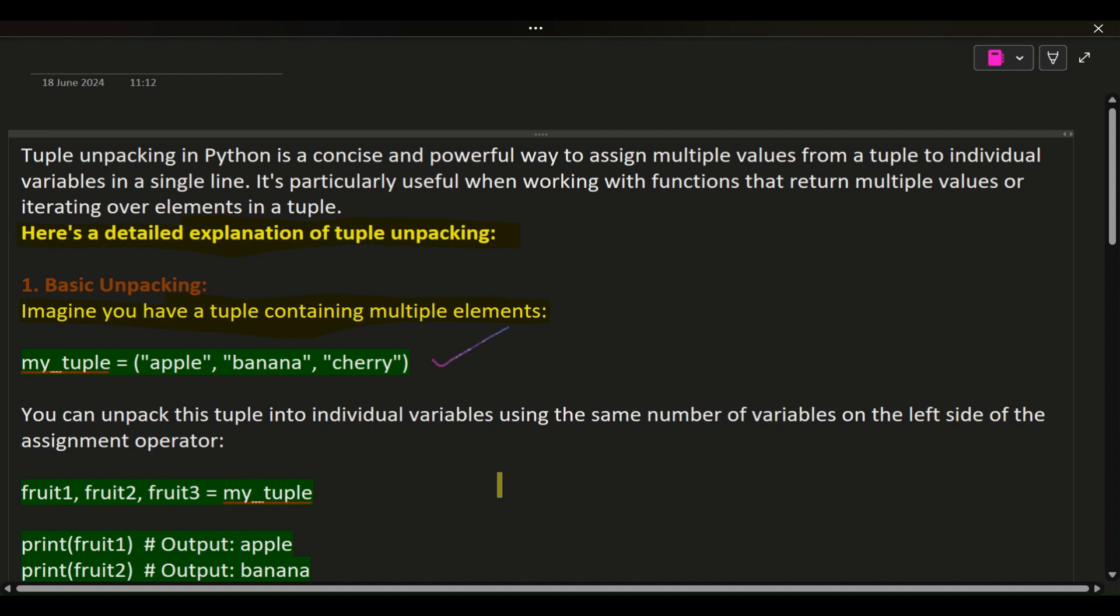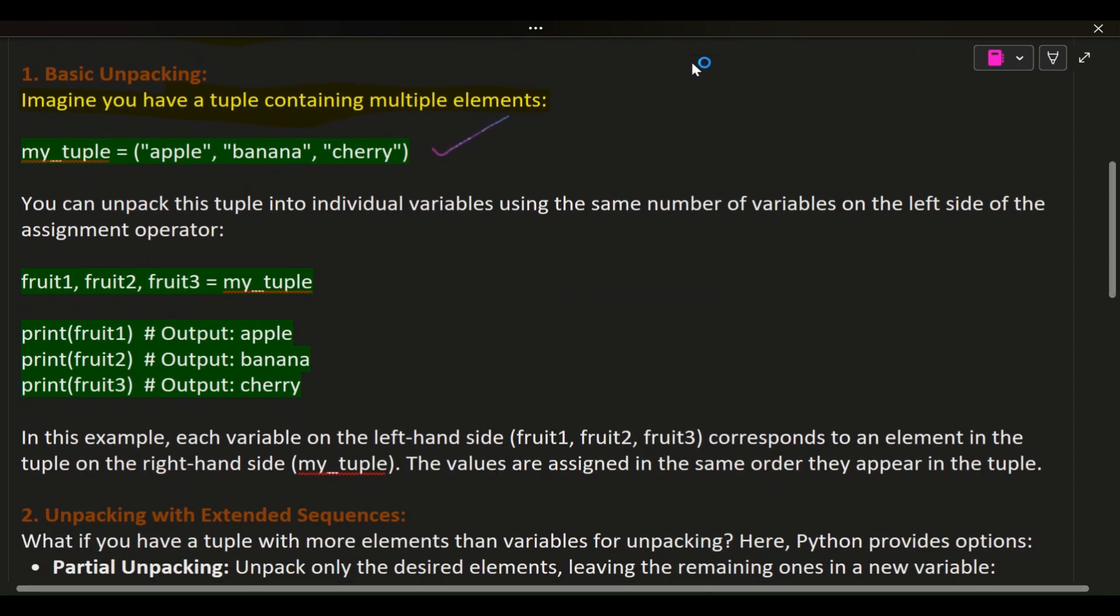fruit1, fruit2, fruit3 = my_tuple. print(fruit1) # Output: apple